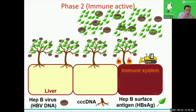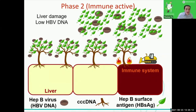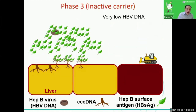The immune system starts to clear the virus and kill those cells that are infected. Because there are fewer infected cells to produce the virus, you get a decrease in the amount of HBV DNA that's circulating. Eventually, with enough immune response, you start to clear a lot of the virus and virus-infected cells, so you have a very low amount of HBV DNA in the blood.